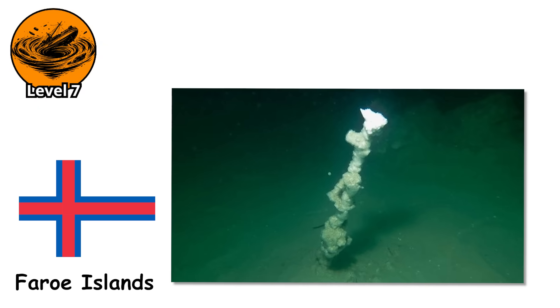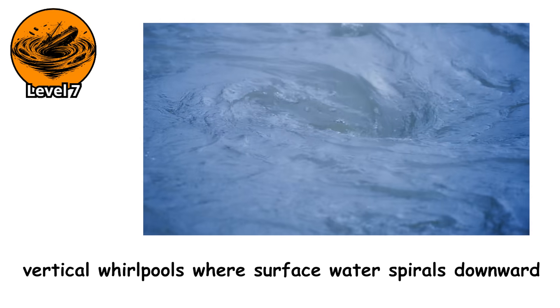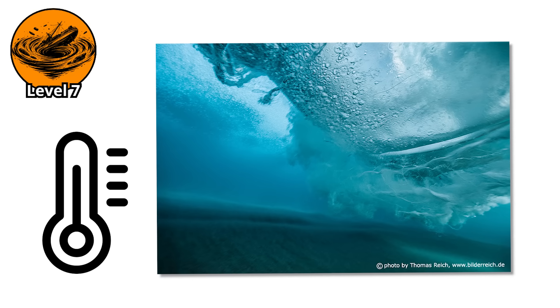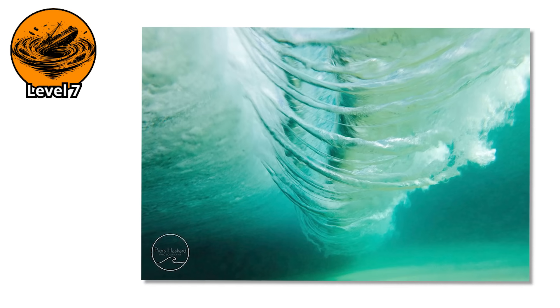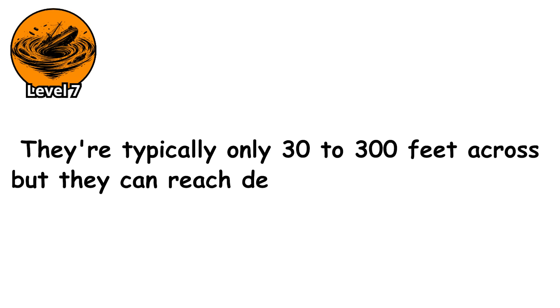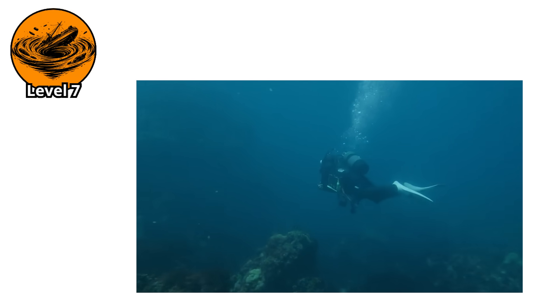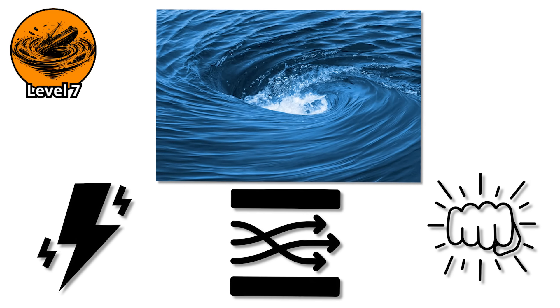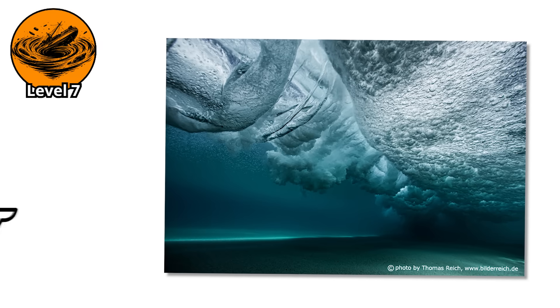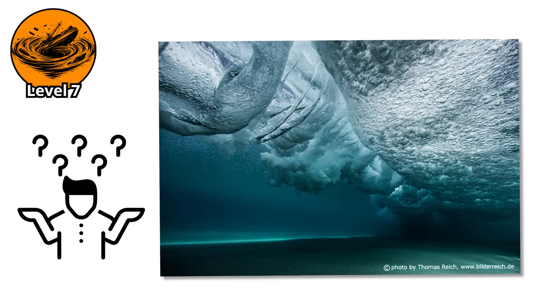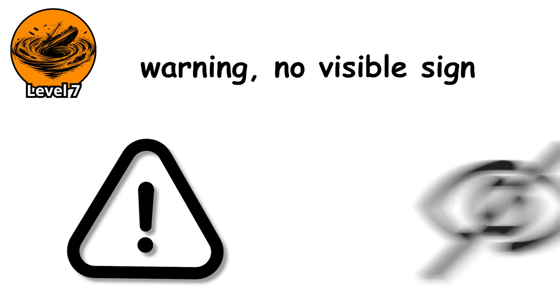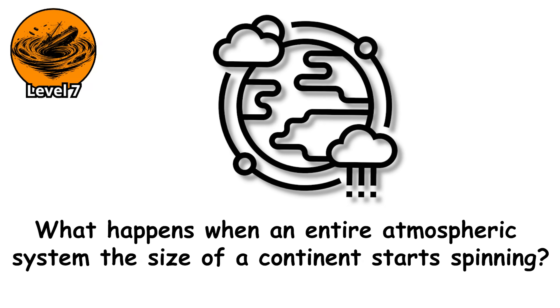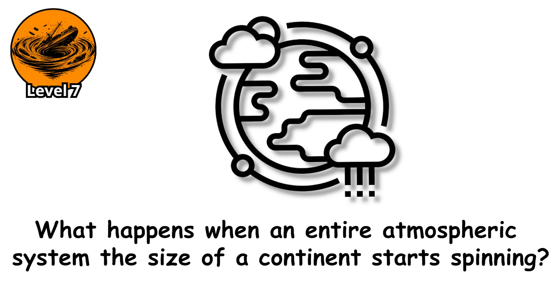But the most dangerous underwater vortexes are vertical. In the Faroe Islands, scientists discovered chimneys in the ocean. Vertical whirlpools where surface water spirals downward into the deep sea. These vortexes are driven by temperature and salinity differences that cause water to sink rapidly, pulling surrounding water into a descending spiral. They're typically only 30 to 300 feet across, but they can reach depths of over 2,000 feet. A diver caught in one of these would be pulled downward with little chance of fighting back. The current isn't violent or turbulent like a surface whirlpool. It's more like being dragged down by an invisible hand. By the time you realize what's happening, you're too deep. Your air is running out and the pressure is crushing you. There would be no warning, no visible sign at the surface. But underwater whirlpools are still localized, constrained to specific regions. What happens when an entire atmospheric system, the size of a continent, starts spinning. Level 8.